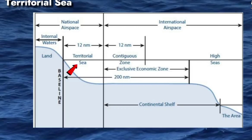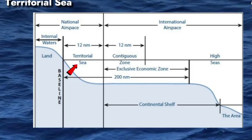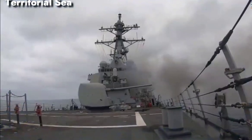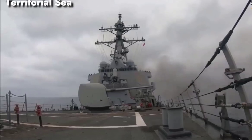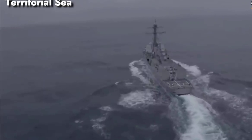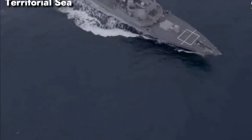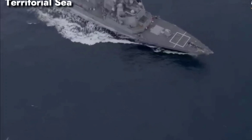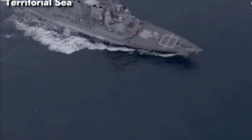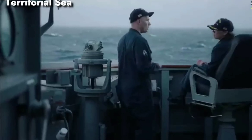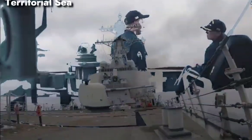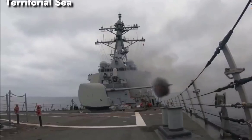The next zone is the territorial sea. As defined by UNCLOS, the territorial zone is the belt of coastal water extending 12 nautical miles — that is 22 kilometers — from the nearest baseline. All this area comes under the territorial zone.